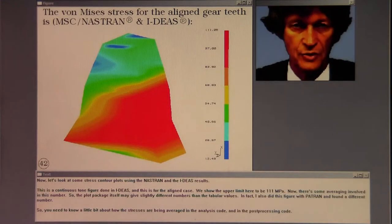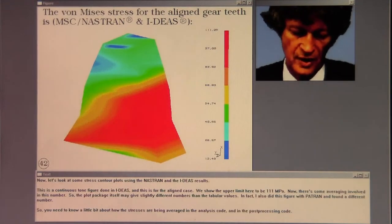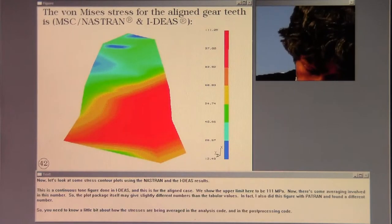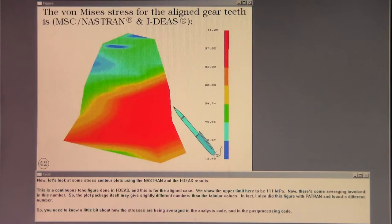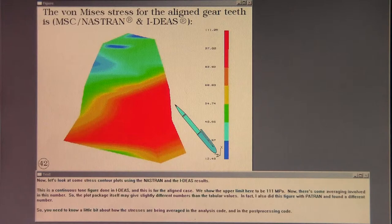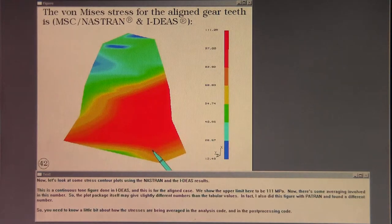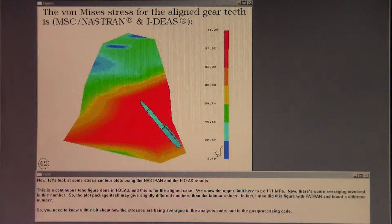Now let's look at some stress contour plots using the Nastran and the Ideas results. This is a continuous tone figure done in Ideas, and this is for the aligned case. We show the upper limit here to be 111 megapascals. Now there's some averaging involved in this number.